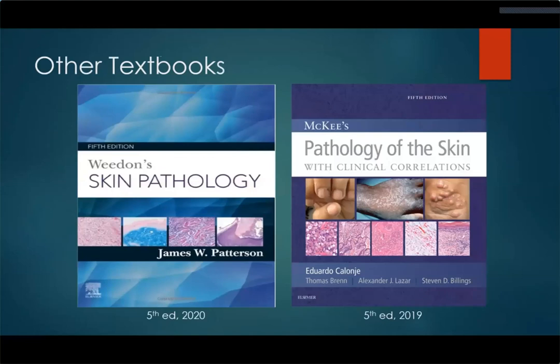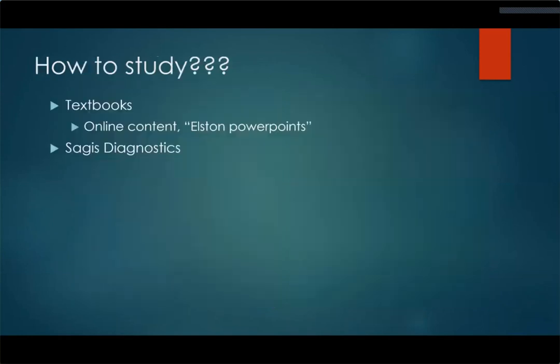There are other textbooks too — these ones are in many cases a bit more detailed. Weedon's Skin Pathology has a relatively new edition. McKee's Pathology of the Skin, now written by Dr. Calonje, originally came out of Great Britain. McKee's actually has a lot of clinical content in it and was originally geared more towards pathologists to provide Kodachromes and clinical pictures, which can be very handy for a dermatologist as well to pair up with the histopathology. Picking a textbook and pursuing it is going to be very helpful.